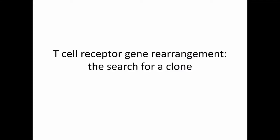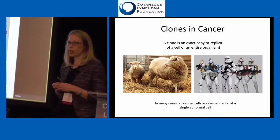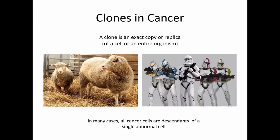Now talking about clonality. For those of you who have a cutaneous T cell lymphoma, you may have had a study done on your blood or your skin called a T cell receptor gene rearrangement study. By definition, cancers tend to be made up of clones — exact copies of things. But not everything that is a clone is cancer. Dolly the sheep was the first cloned organism — a genetic exact copy. In cutaneous lymphoma, we start with an abnormal cell and then it divides and divides. Because all the copies have that same T cell receptor, we're able to pick out that family of cells that all came from that one abnormal cell.